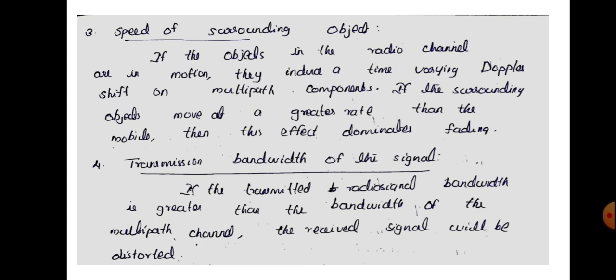Next is the speed of surrounding objects. If objects in the radio channel are in motion, they induce a time-varying Doppler shift on the multipath components. If the surrounding objects move at a greater rate than the mobile, this effect dominates the fading. Signals transmitted through the channel may hit moving objects and be redirected to other paths, increasing multipath components and changing the Doppler shift.